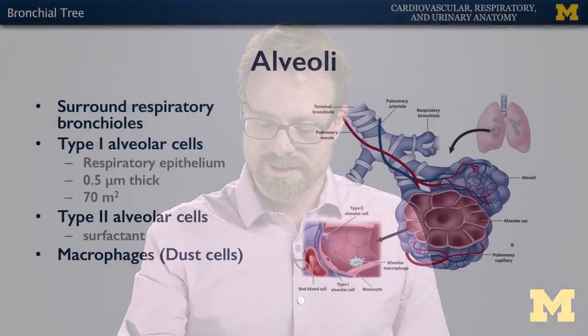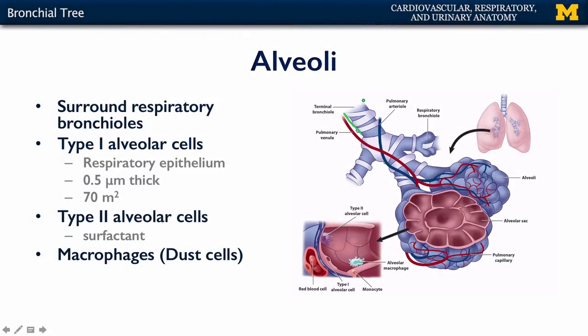The ultimate destination along the bronchial tree pathway is the alveoli. Here we can see the terminal bronchiole descending and branching into respiratory bronchioles, which support alveoli — these air sacs. The saccular nature of the alveoli maximizes surface area across which gases can diffuse. Inside an individual alveolus, there are two major cell types important for the alveolar wall.